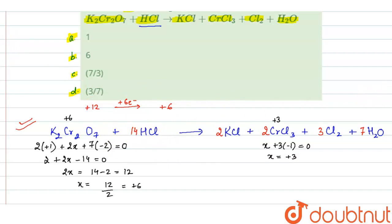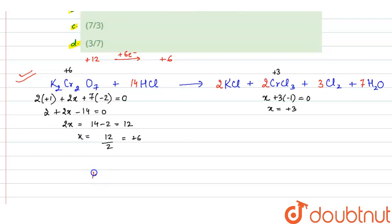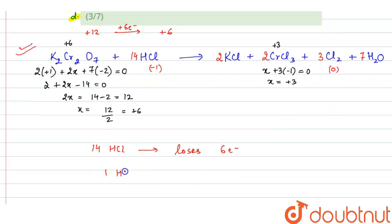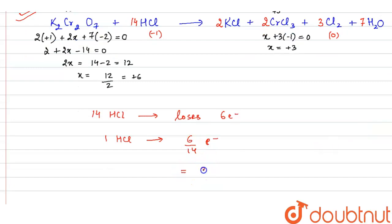So 14 moles of HCl loses 6 electrons, because in HCl chlorine has a −1 charge, but in Cl₂ chlorine has 0 charge — meaning 6 chlorine atoms lose 6 electrons. Therefore, 1 mole of HCl will lose 6/14 electrons, which equals 3/7 electrons.